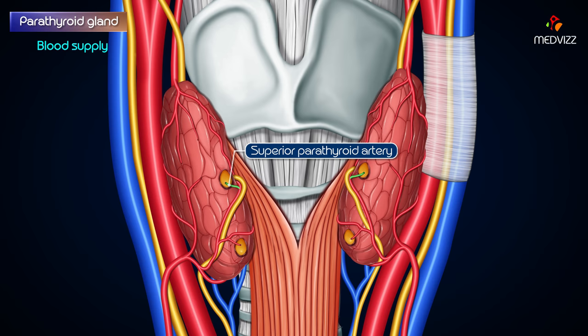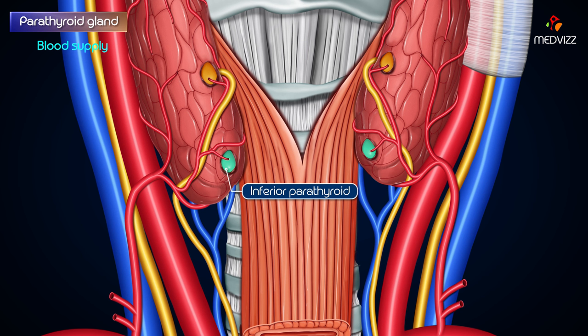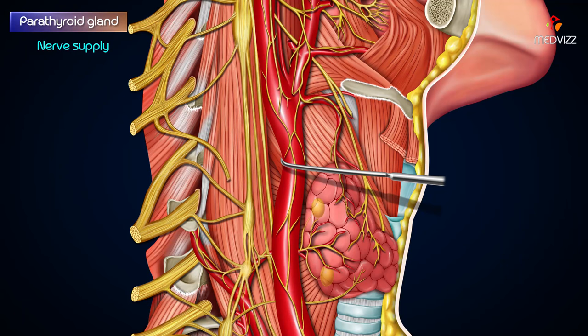The superior parathyroid is supplied by the superior parathyroid artery, a branch from the anastomotic artery joining the superior and inferior thyroid arteries, or from the inferior thyroid artery. The inferior parathyroid is supplied by the inferior parathyroid artery, a branch of the inferior thyroid artery.